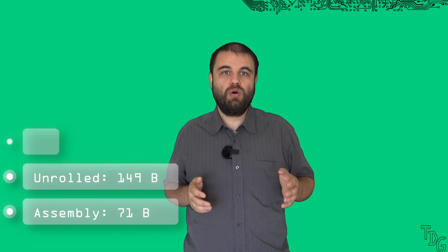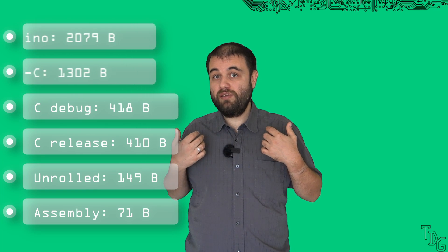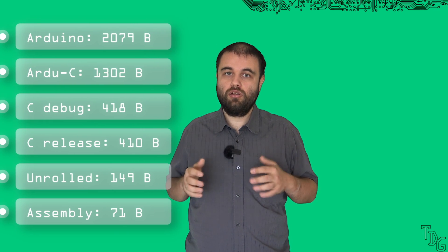But if we compare it to our previous hex files, it's still bloated. The assembly examples were 71 and 149 bytes long, the C ones needed 410 and 418 bytes, the Arduino framework triples the binary size in this case, and that's a lot.